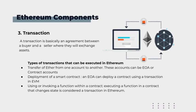Let's look at component number three: the transaction. A transaction is basically an agreement between a buyer and a seller where they exchange assets. There are types of transactions that can be executed by Ethereum: transfer of Ether from one account to another — which can be externally owned accounts or contract accounts — deployment of a smart contract, and invoking a function within a contract that changes the state.